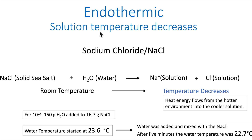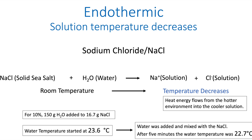To demonstrate our endothermic process, where the solution temperature decreased, we used sodium chloride — just solid Morton sea salt — added distilled water to it. It ionizes into Na⁺ and Cl⁻. The water temperature went to a lower temperature. Heat energy always flows from hotter to colder; in this case, heat energy flows from the hotter environment into the cooler solution. We used a 10% solution: 16.7 grams of sodium chloride in 150 grams of distilled water. Water started at 23.6°C, and after five minutes it was 22.7°C — a slight but definite endothermic decrease.